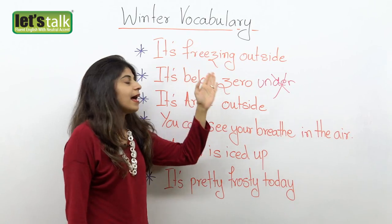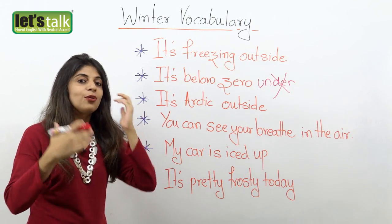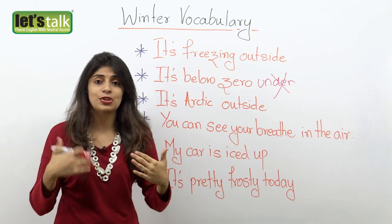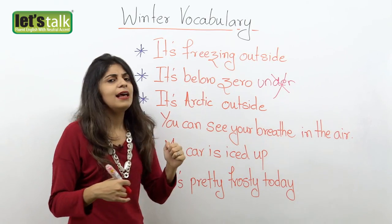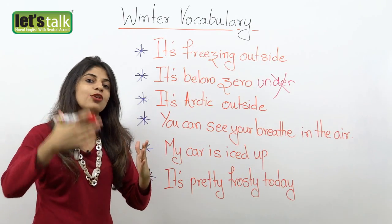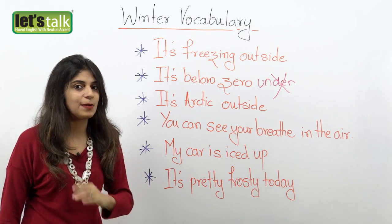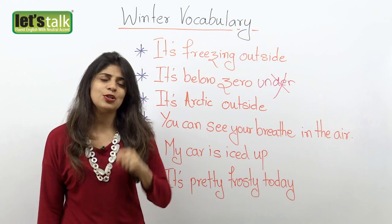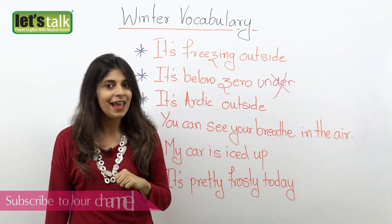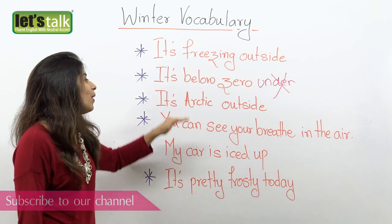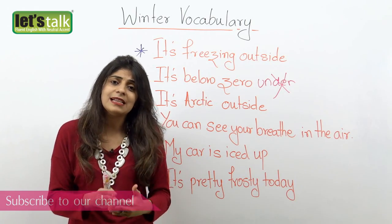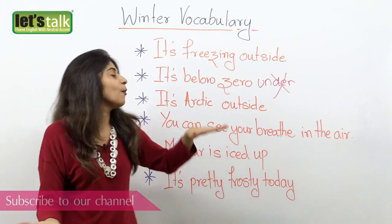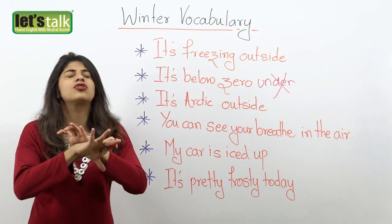Below zero indicates that the temperature has gone into minus. If you have to give an exact temperature and someone asks, what's the temperature like? — you can say it's below zero, and if you know the exact temperature, you can say it's minus two degrees. So you use the word minus because it's below zero. The third expression is: it's Arctic outside. What comes to your mind when you think about the Arctic region? Yes, it's the coldest region. So when I say it's Arctic outside, it means it's extremely cold — like you just can't take it anymore, it's colder than normal.